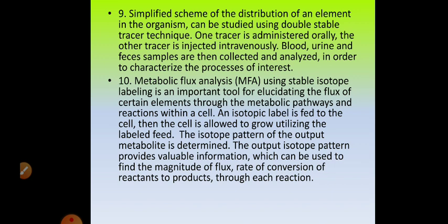Metabolic flux analysis using stable isotope labeling is an important tool to elucidate the flux of certain elements through metabolic pathways — that is, the rate at which conversion of a reactant to product takes place, and the magnitude of the flux. The isotope is fed into the cell and the cell is allowed to grow and utilize it. The output isotope pattern provides valuable information regarding the rate of reaction, magnitude of flux, and the metabolic pathway.